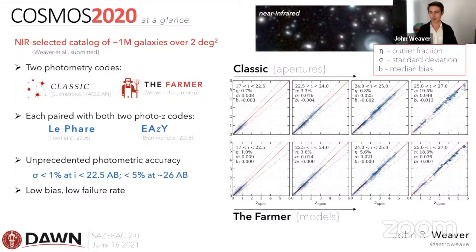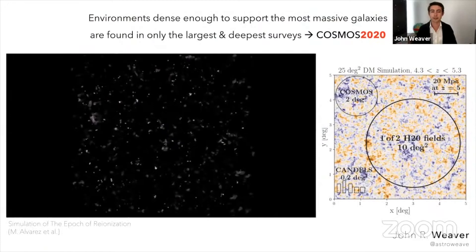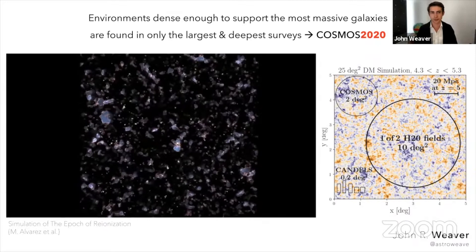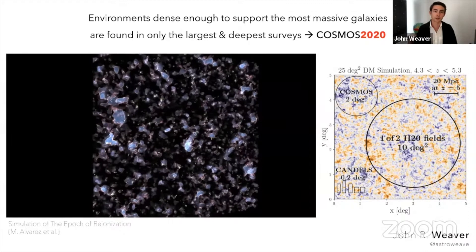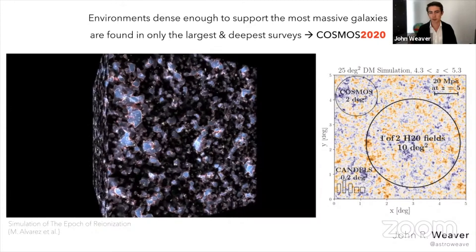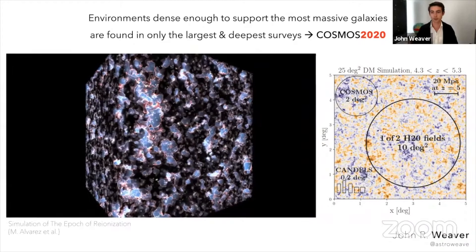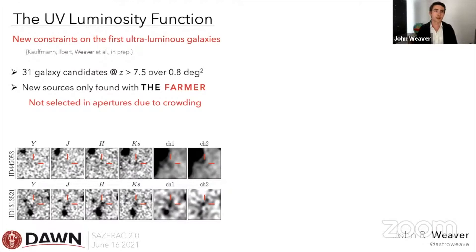In an audience like this I don't need to convince anyone that looking at larger co-moving volumes is important — environments dense enough to support the most massive galaxies are found only in the largest and deepest surveys, which makes COSMOS 2020 over its two square degrees a valuable survey to understand the epoch of reionization. We provide new constraints on the first ultra-luminous galaxies in the UV luminosity function — this is a paper by Olivier Kaufman which is in prep.